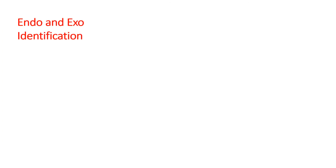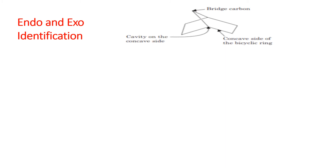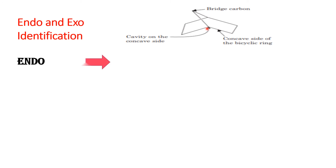Learning about the endo and exo identification. This is a general bicyclic compound — this is the bridge carbon atom, this is the convex side of the bicyclic ring, and this is the cavity of the convex side. Now, learning about the identification of the endo isomer. Here, the substituents are attached to this bicyclic ring. If the substituents are pointing towards the cavity, and the bridge carbon atom and the substituent are trans to each other, then the orientation is endo.